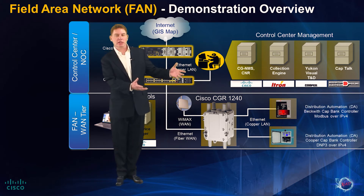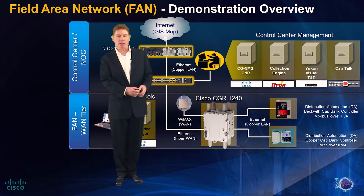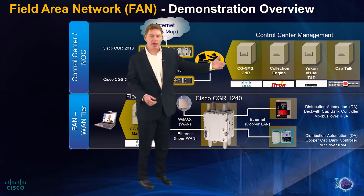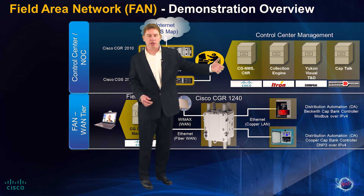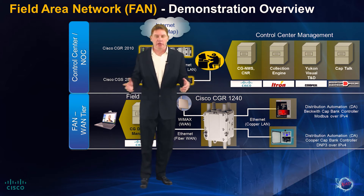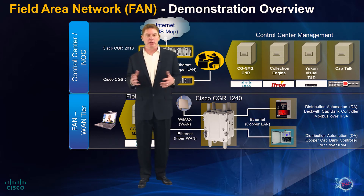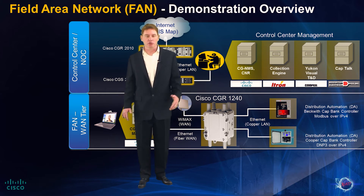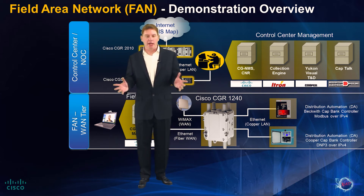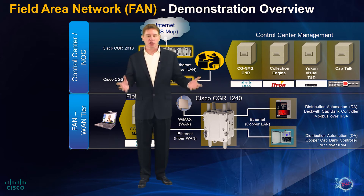The CGR1240 has Ethernet and serial ports that can be used to connect additional devices in the field, like capacitor bank controllers. In this demo, we have two cap bank controllers from partners Beckwith Electric and Cooper Power, connected via Ethernet running either Modbus or DNP3 over IP. This allows the utility to receive data from and control these devices through applications like UConn Visual TND or CapTalk. The cap bank controllers are used to ensure the grid is operating as efficiently as possible as part of an integrated volt-var control system.